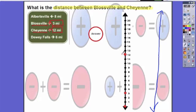I'm going to reread my question: what is the distance between Blossville and Cheyenne? Counting between them, I get nine units. So I believe my distance is nine units.